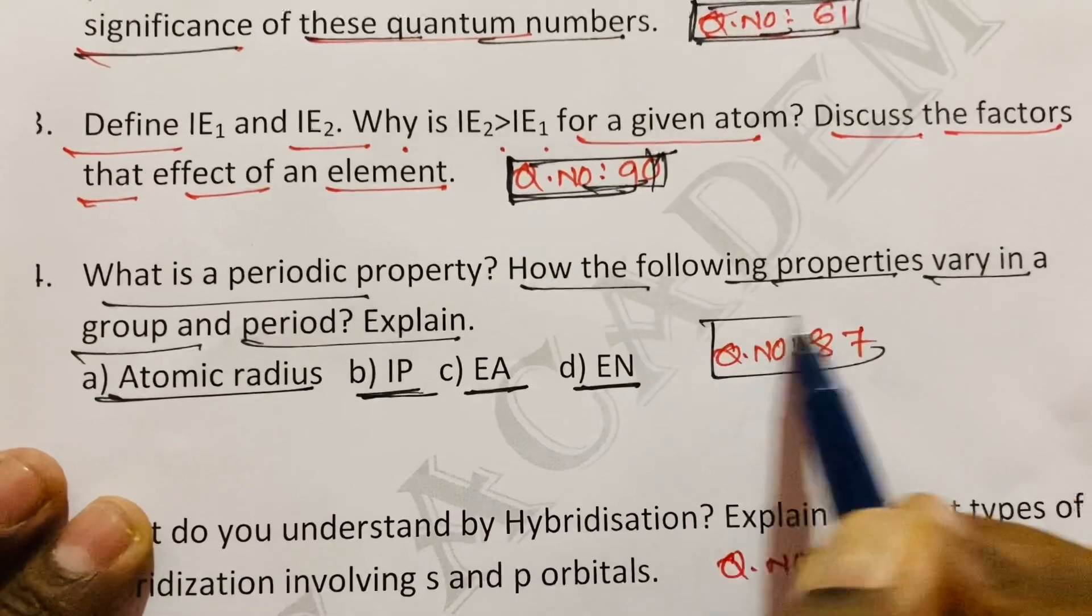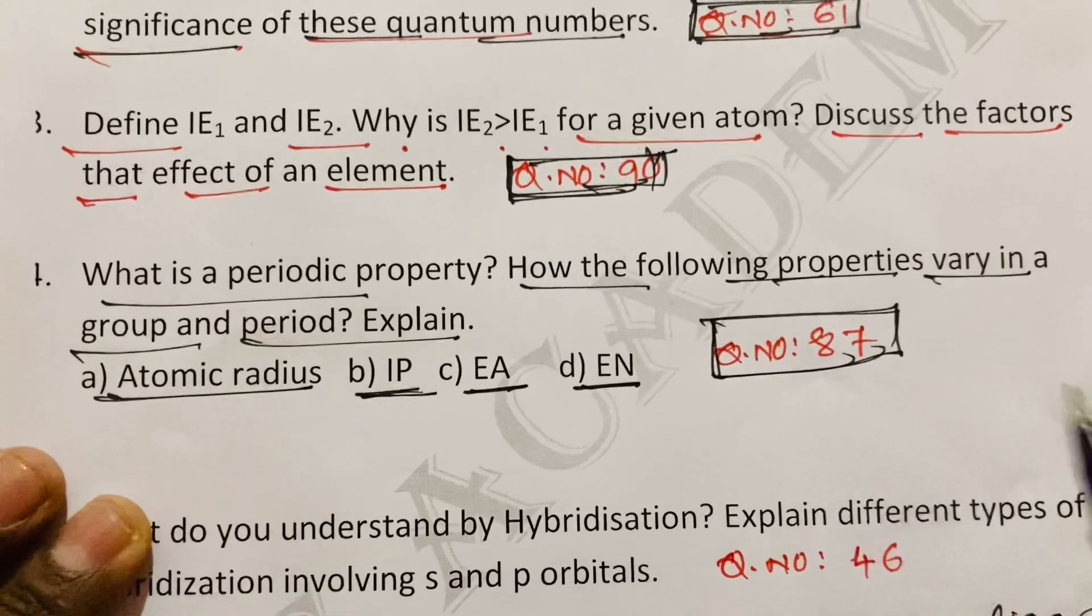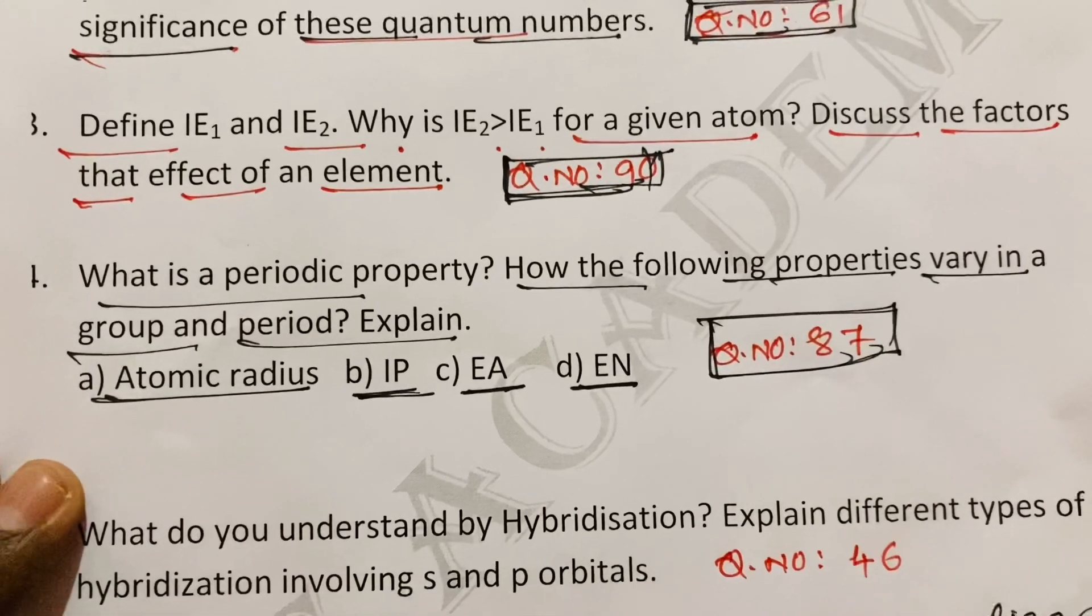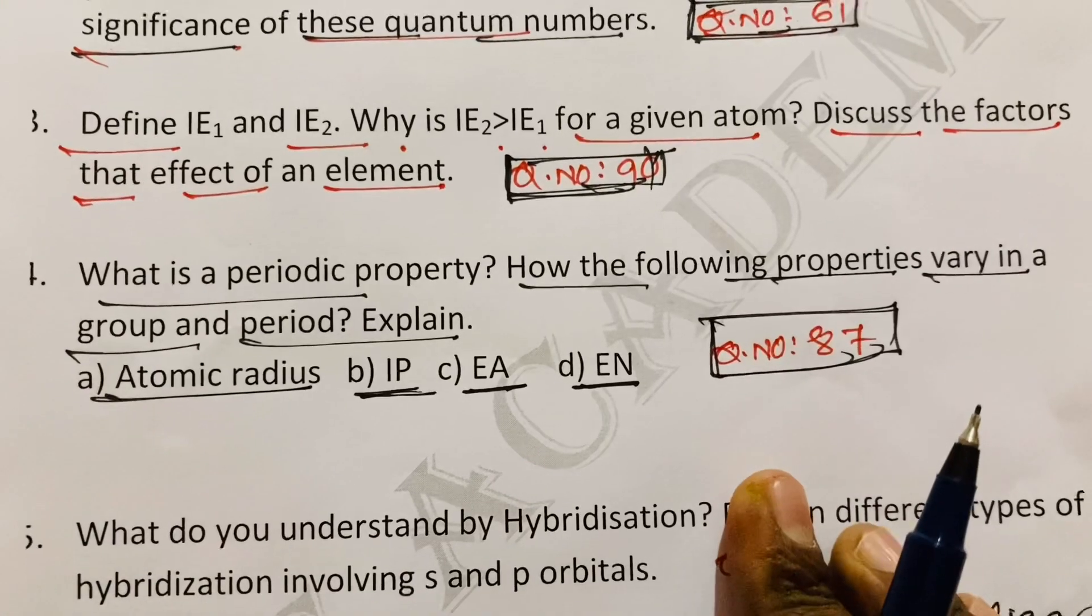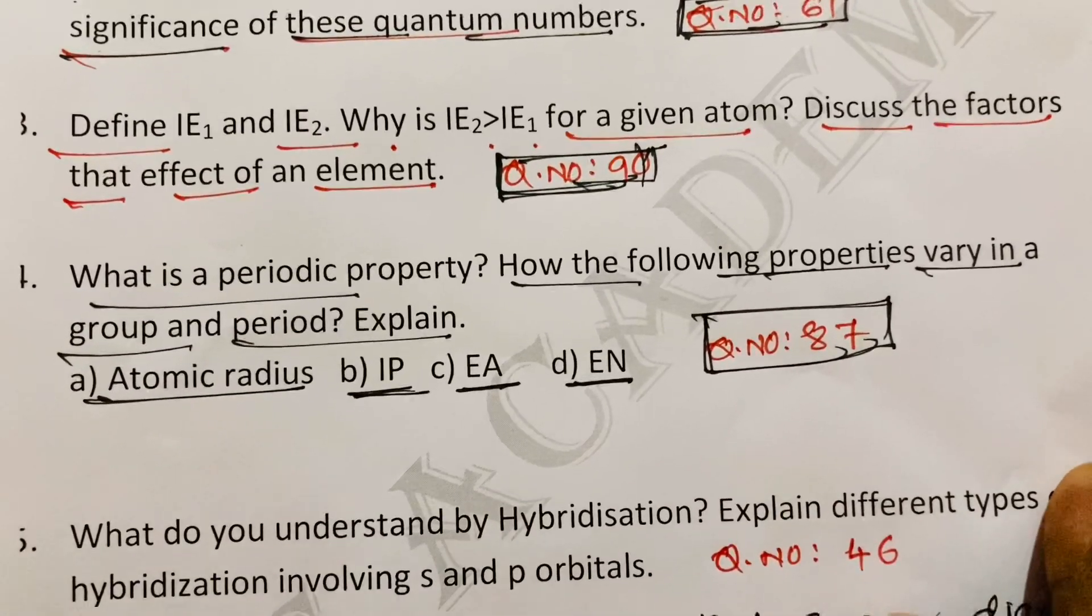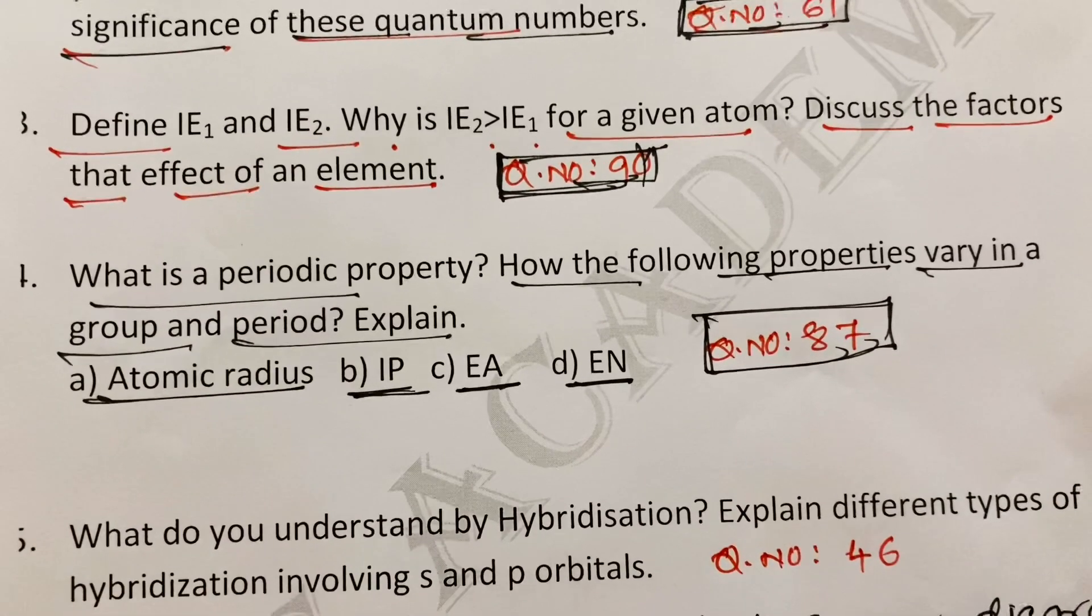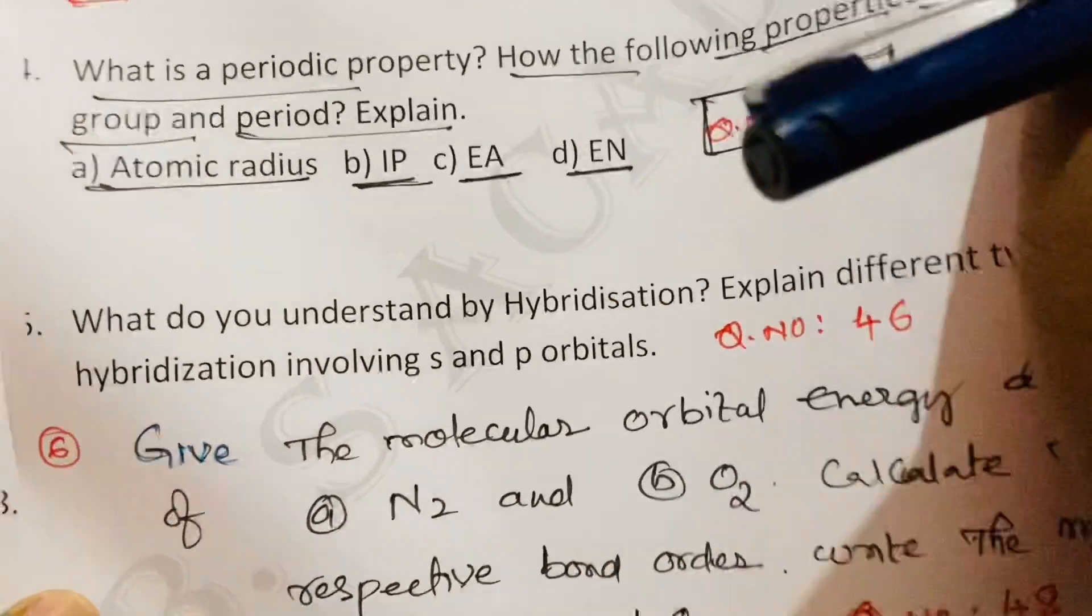That is question number 87. These two questions are very very most important from periodic classification or classification of elements. Out of these two questions, one question will come in final exam. Next question from chemical bonding lesson.